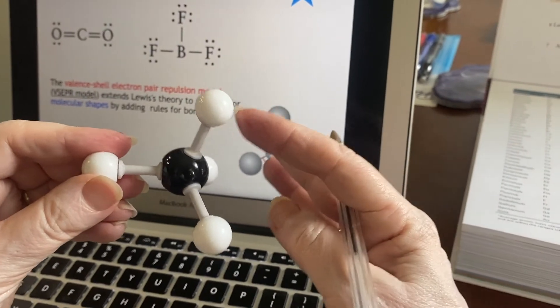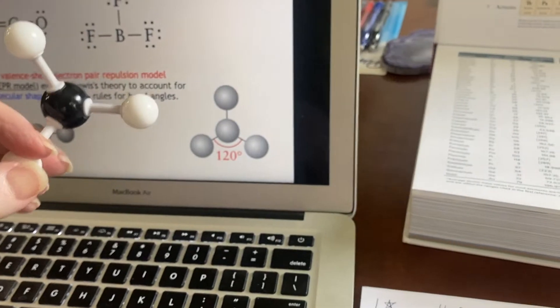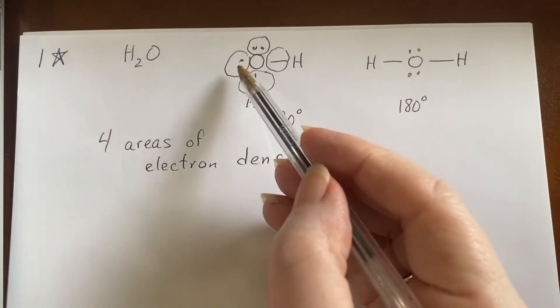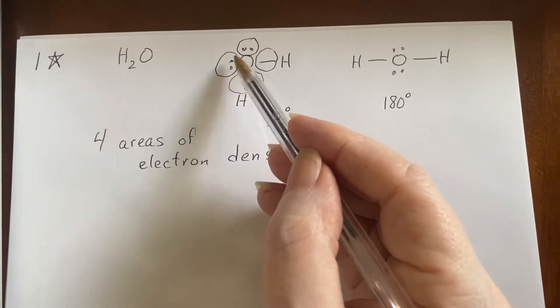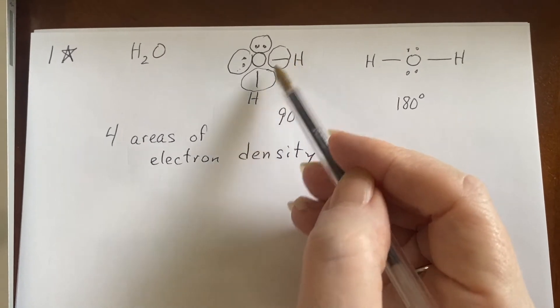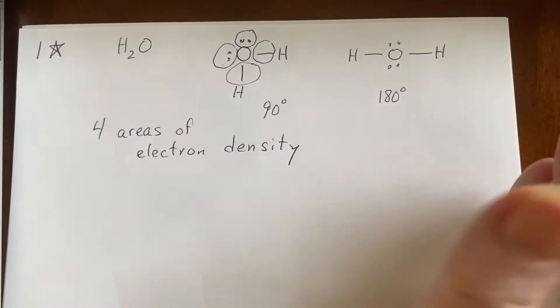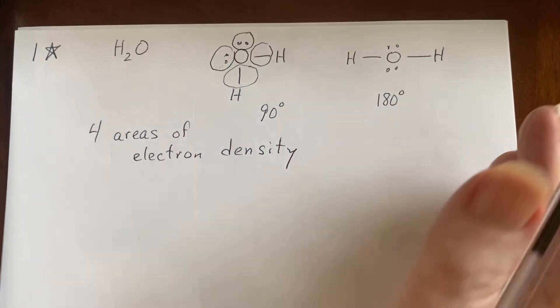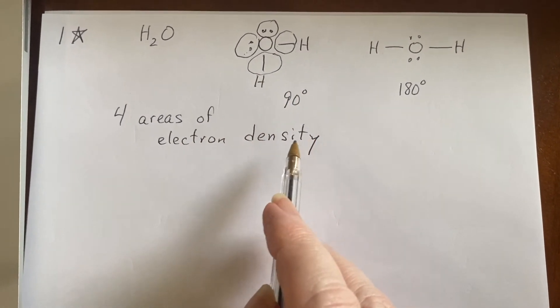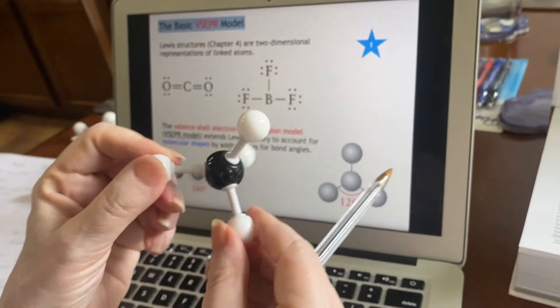And we said this was 109.5 degrees between these. So why is it that I didn't say that it was 109.5 degrees? Well, because two of these areas of electron density are lone pairs. Two of them are in the bonds with the hydrogen, and they don't respond to each other exactly the same way. It's not quite the same. So these end up giving you slightly different numbers when they aren't exactly connected to the same sorts of things. All right?